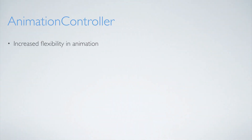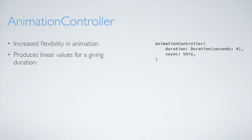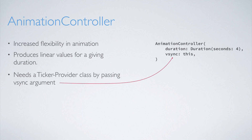The animation controller class gives you increased flexibility in animation. The animation can be played forward or reverse and you can stop it. The animation controller class produces linear values for a given duration and it tries to display a new frame at around 60 frames per second. The animation controller class needs a ticker provider class by passing the VSync argument in the constructor. The VSync prevents off-screen animations from consuming unnecessary resources.